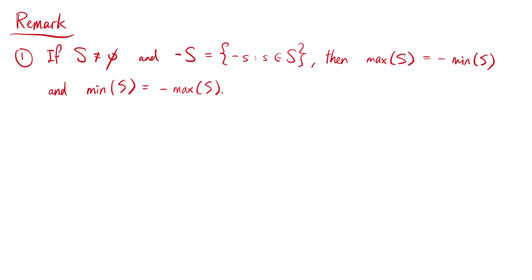Note that if s is a non-empty set and negative s consists of elements negative little s, while little s is an element in s, then the maximum of s equals the negative of the minimum of negative s, and the minimum of s equals the negative of the maximum of negative s.